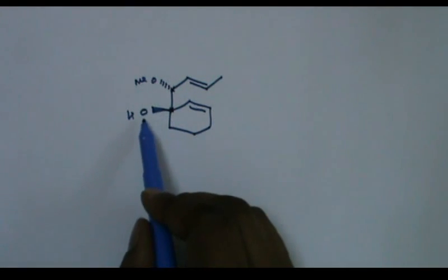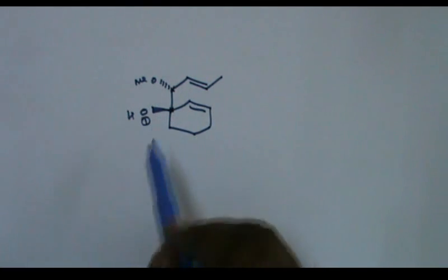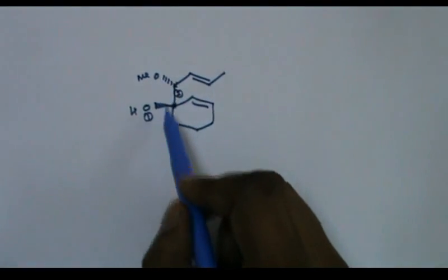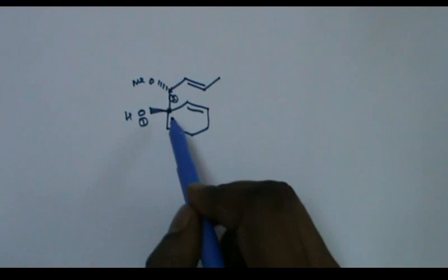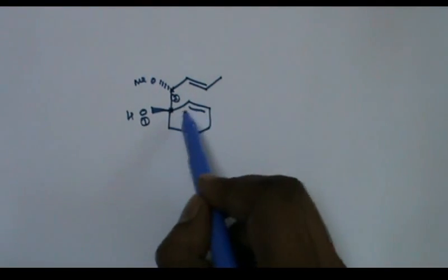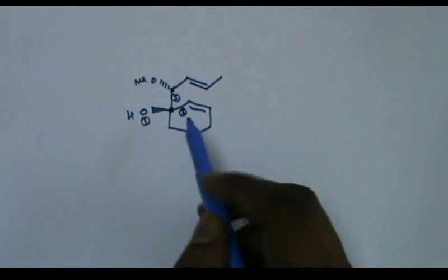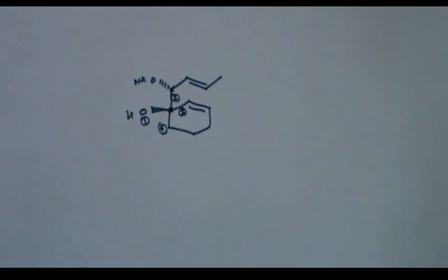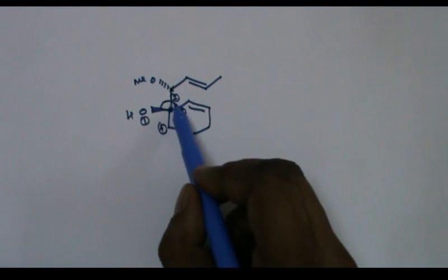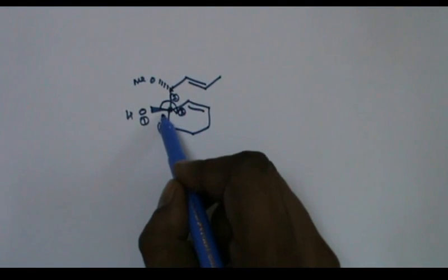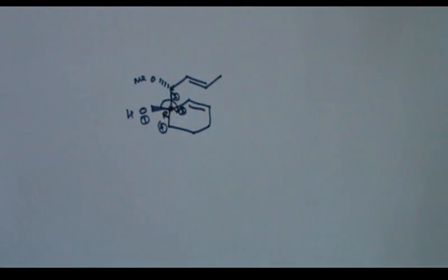Here, the first priority goes to OH. Second one goes to this one. Since the next atom is oxygen, this gets higher priority. And the third one, this one because there is double bond. So this gets third priority. Fourth one, this methyl. Now, it is clockwise direction. So this carbon gets R configuration.